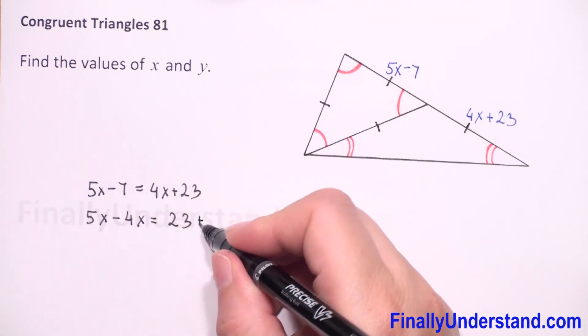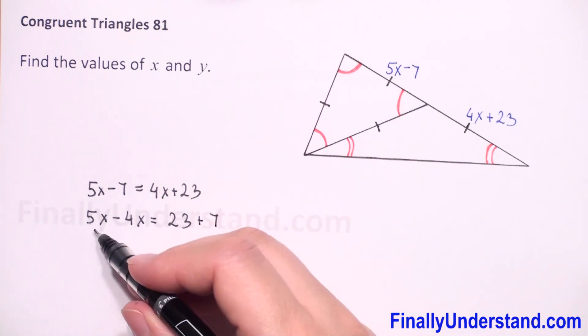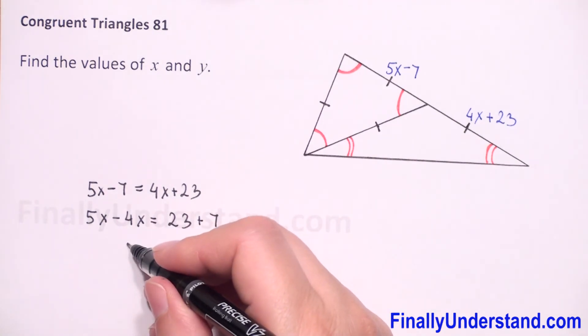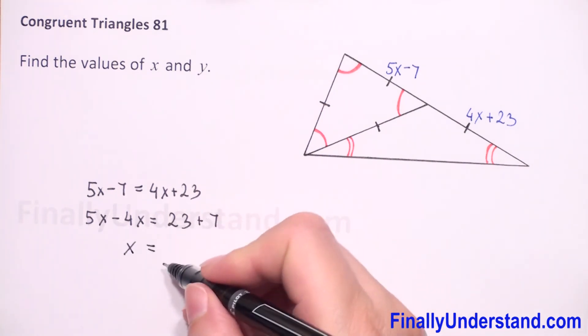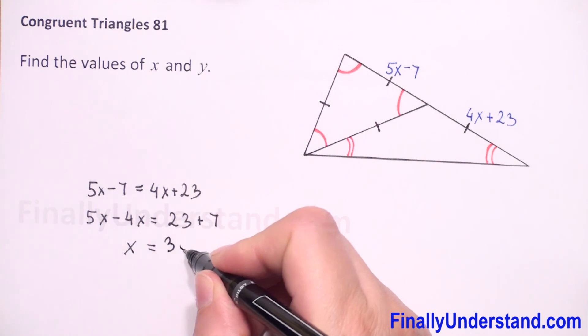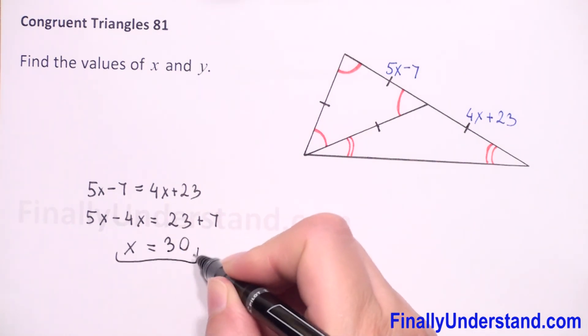So we have 5 minus 4 is 1, so we don't have to write 1, we have only x. x is equal to 23 plus 7, which is 30. This is my solution.